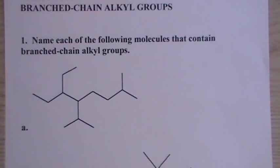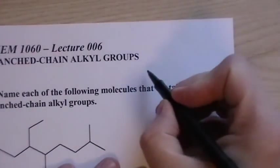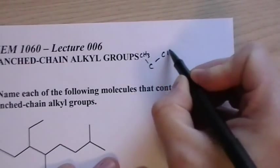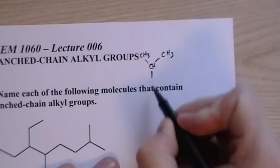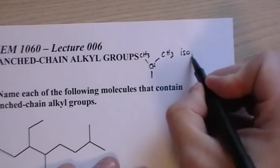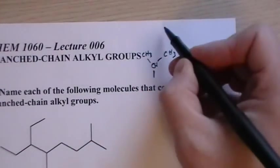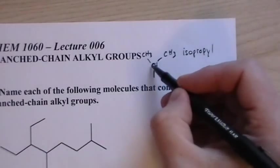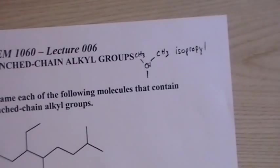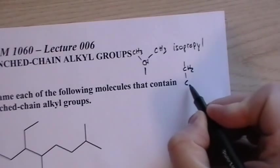Let me write them out here. When we have a carbon with CH3 and CH3 branches, if this whole part is attached to a parent chain, we call this isopropyl. If it were a carbon branched off the chain in a straight chain, that'd be propyl. But since the first carbon then branches off in either direction, we call it isopropyl.